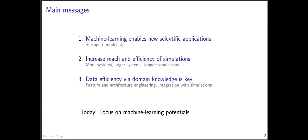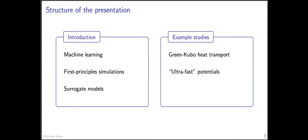The third point I'd like to make is that one key to achieving this will be the integration of domain knowledge into the machine learning model for increased data efficiency — needing less training data and less reference data. We saw an example in Kieron Burke's talk yesterday where he used the Kohn-Sham equations to regularize a machine learning model. The presentation has two parts: an introductory part on the principles underlying machine learning potentials, and then two ongoing studies from my group — one on thermal transport coefficients using the Green-Kubo formalism, and another attempting to construct the fastest possible machine learning potential.